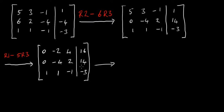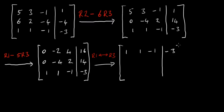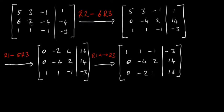Next I'm going to take row one and row three and interchange those two rows. So I end up with: row one becomes 1, 1, minus 1, minus 3; row two stays 0, minus 4, 2, 14; and row three becomes 0, minus 2, 4, 16.